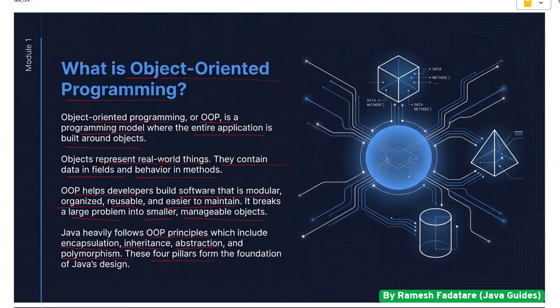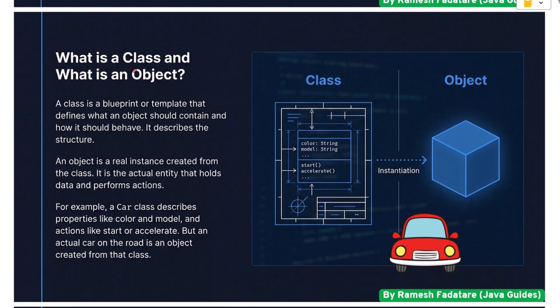What is a class and what is an object? A class is a blueprint or template that defines what an object should contain and how it should behave — it describes the structure. An object is a real instance created from the class; it is the actual entity that holds data and performs actions. For example, a Car class describes properties like color and model and actions like start or accelerate.